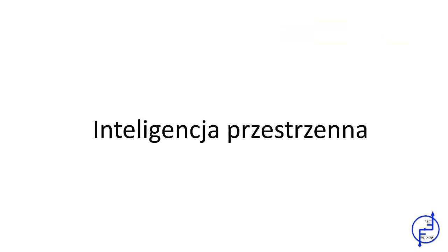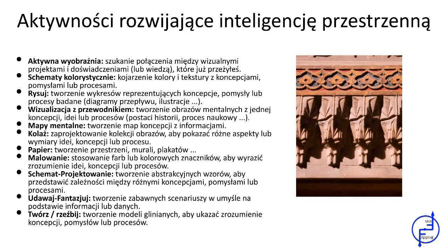Jak pracować nad inteligencją przestrzenną? Do stymulowania inteligencji przestrzennej możemy wykorzystać: uruchomienie wyobraźni, znajdowanie powiązań między wizualizacjami a doświadczeniami lub wiedzą, schematy kolorów i faktur, kojarzenie kolorów i tekstur z koncepcjami, pomysłami lub procesami, rysowanie, tworzenie wykresów reprezentujących koncepcje, pomysły lub procesy, diagramy przepływu oraz ilustracje.